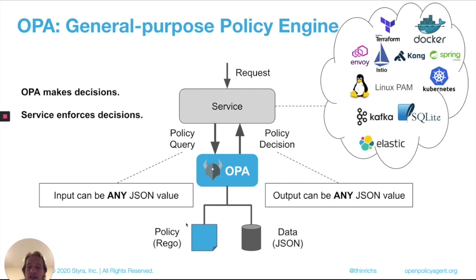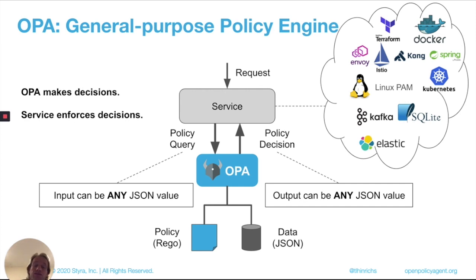The policy language OPA provides, called Rego, is flexible enough to allow you as a policy author to make whatever authorization and policy decisions you want over arbitrary JSON data. A good example: if you want to write a policy that says all containers deployed onto a Kubernetes cluster need to come from a trusted image registry, you need to dig down through arbitrarily deeply nested JSON data, iterate over the array of containers, extract the image name for each container, and then do some string manipulation to figure out whether that image is coming from a trusted registry. All those kinds of functionality are things that Rego was designed to be able to do.